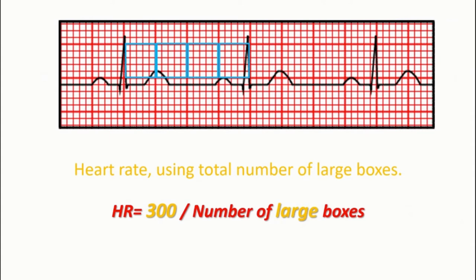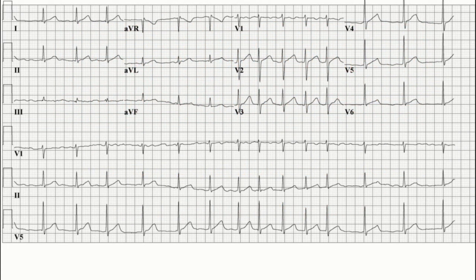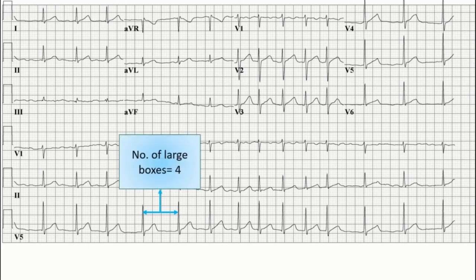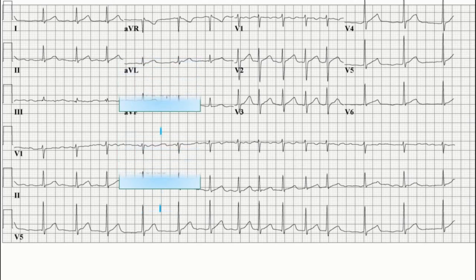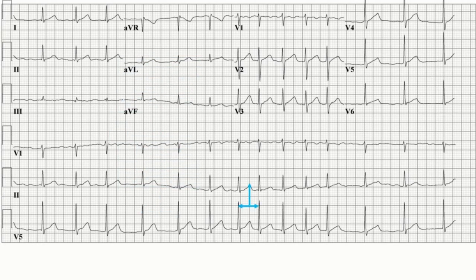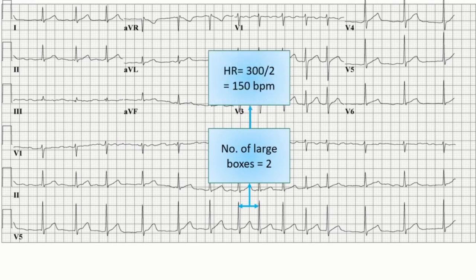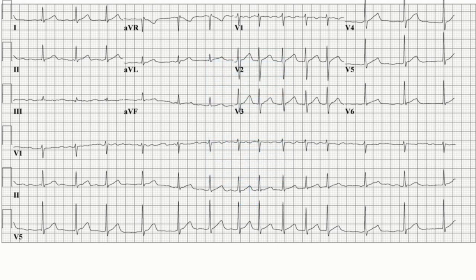I also mentioned that both these methods can't be used if the rhythm is irregular, such as in today's example where the rhythm is irregular because of atrial fibrillation. If we try to calculate the heart rate between two RR intervals with the large box method, there are approximately four large boxes giving a heart rate of around 75 beats per minute. Whereas between two other RR intervals, there are only two large boxes giving a heart rate of 150 beats per minute — a huge variation in the same ECG due to the irregular rhythm.